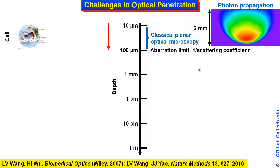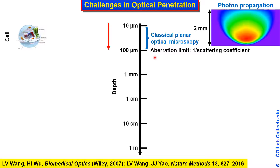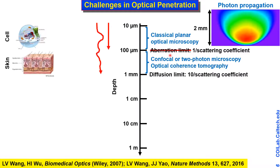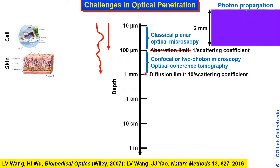350 years ago, conventional microscopy was invented, giving sub-cellular resolution but with penetration limited to 100 microns — the aberration limit. We stagnated at this limit for hundreds of years until the laser was invented. Using modern light sources we overcame the aberration limit and advanced penetration by an order of magnitude to about one millimeter, the optical diffusion limit. Beyond this, ballistic photons are very rare and signal-to-noise ratio is too poor for good imaging.